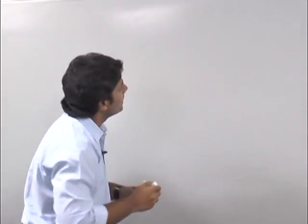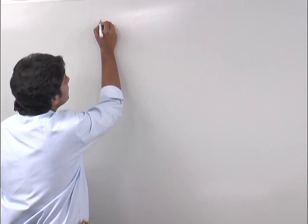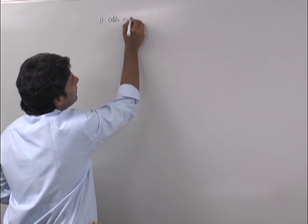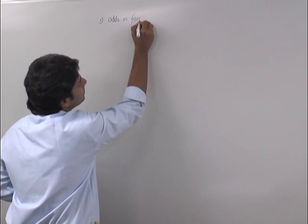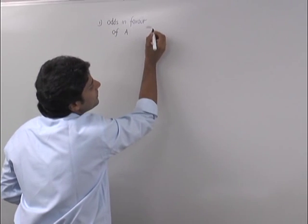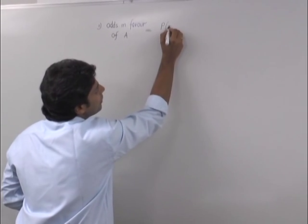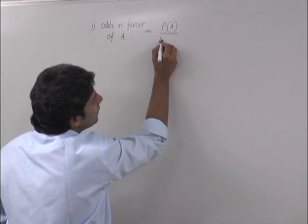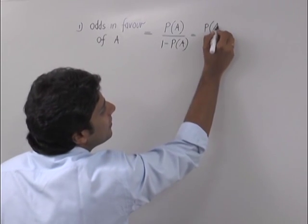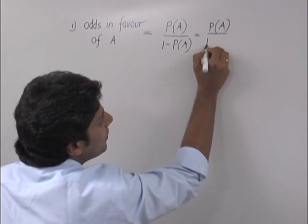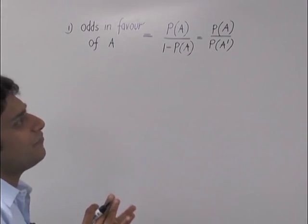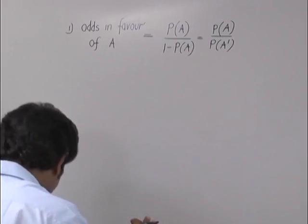We have two formulae. The first one. Odds in favor of event A. It is given by the formula P(A) upon 1 minus P(A). 1 minus P is P(A) complement. That is P(A) upon P of A complement. Just remember this formula. This is odds in favor.